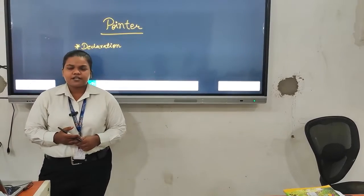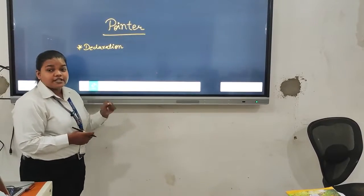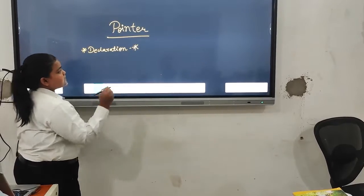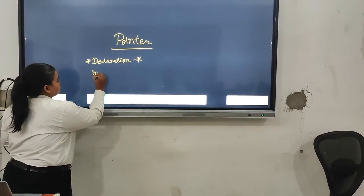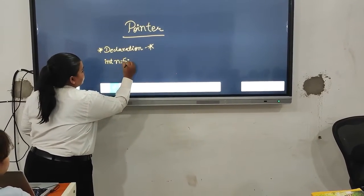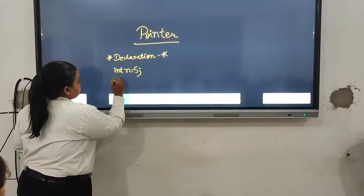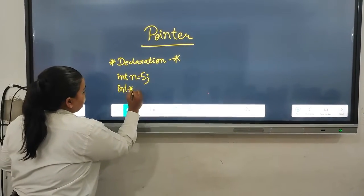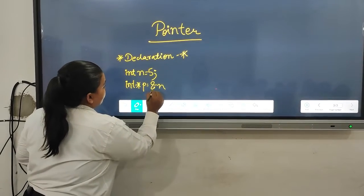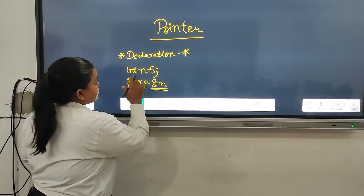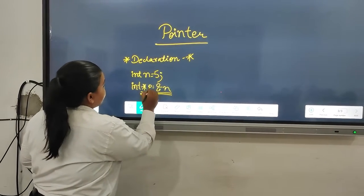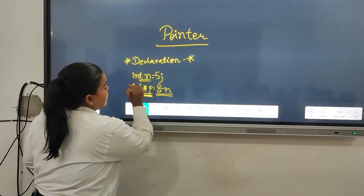Now how is the declaration of pointer done? The declaration of pointer is done using asterisk symbol. Here we can see the example. If I am writing int n equals to 5, and I am using int asterisk p equals to ampersand n, the p variable is pointing to the address of n variable.